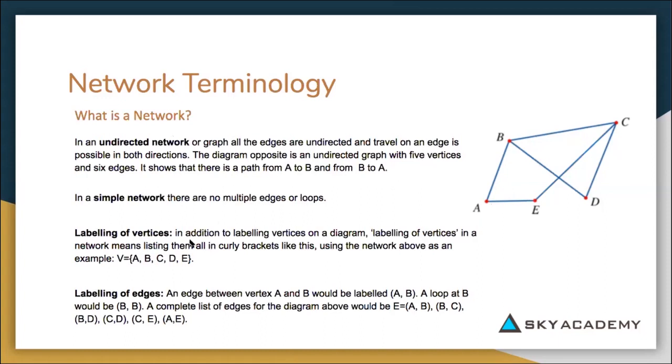When we're labeling vertices, you put a V out the front for vertex, and then you do an equal sign and then the brackets. And then you just simply label each vertex that is in the diagram. So as you can see here, they have just labeled it from alphabetical order: A, B, C, D, E.